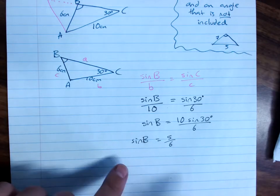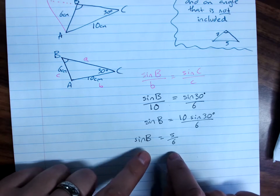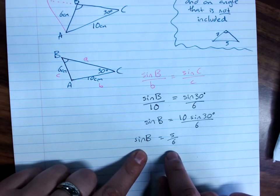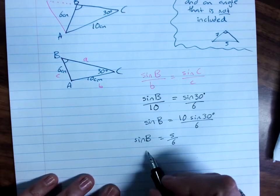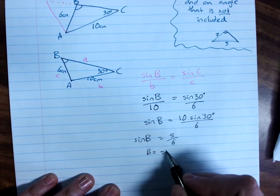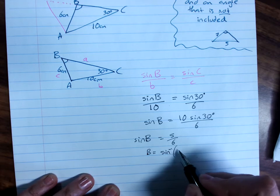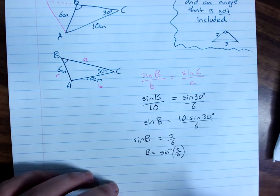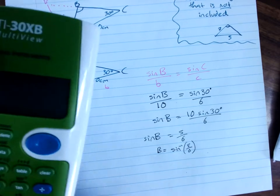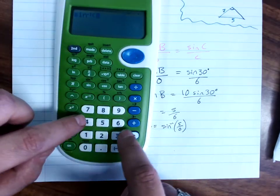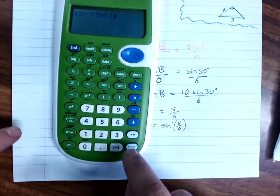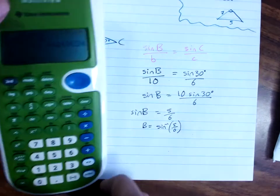And since I'm given no guidance as to which of them is correct, I have to evaluate angle B just using my calculator, inverse sine of 5 on 6. So it could be 56 degrees.